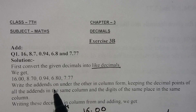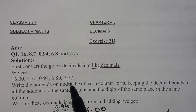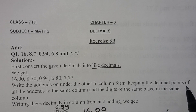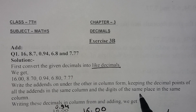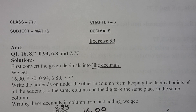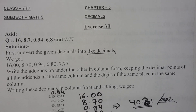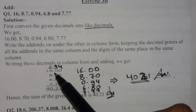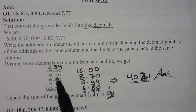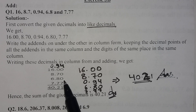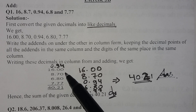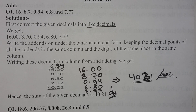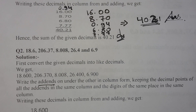0.94 will remain 0.94, 6.8 will be 6.80, and 7.77 will remain 7.77. We write the addends one under the other in column form, keeping the decimal points of all addends in the same column and digits of the same place value in the same column. So we arrange: 0.94, 16.00, 8.70, 6.80, 7.77. When we add all these numbers, the answer will be 40.21.